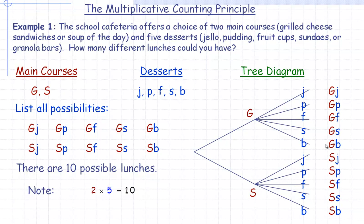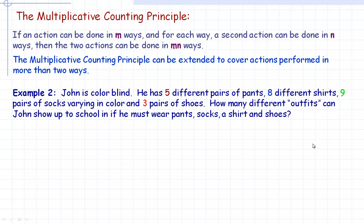The Multiplicative Counting Principle states that if an action can be done in m number of ways, and for each of those ways a second action can be done in n number of ways, then the two actions can be done in m times n ways. The principle can be extended to cover any number of actions, not just two.